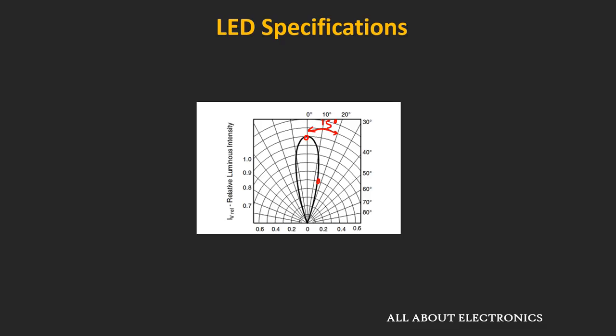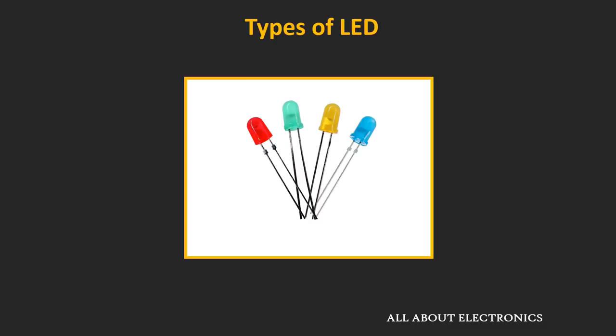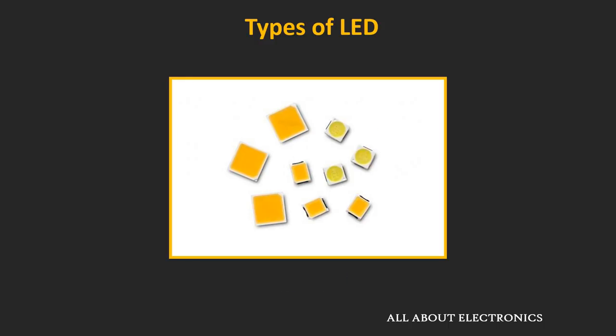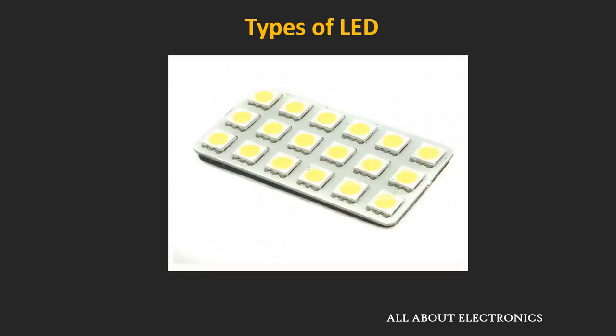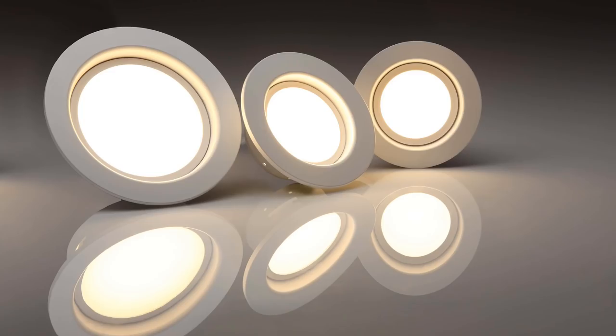Now let's briefly talk about the different types of LEDs. The first type of LED is the through-hole type of LED, and it is still very popular among electronic hobbyists and used in many applications. The second type of LED is the SMD LED, or surface mount LED. These type of LEDs are very tiny in size and they are mounted or installed on the circuit board itself. Today they are quite commonly used in LED bulbs and other applications.